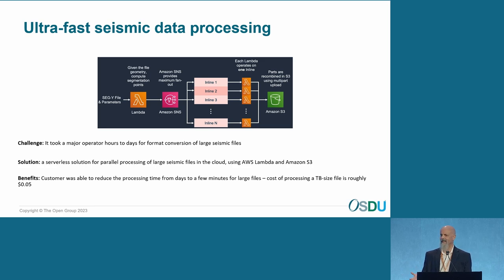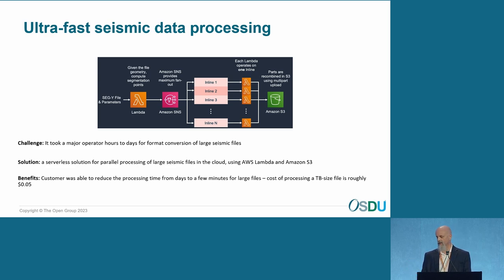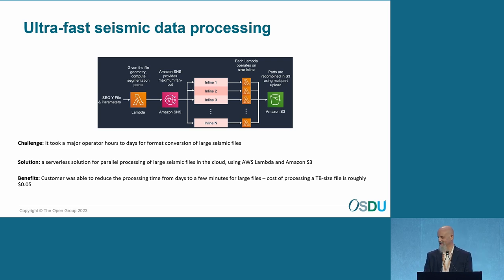One use case I want to highlight is ultra-fast seismic data processing. Using AWS Lambda, we were able to parallelize conversion of large seismic files — something that previously took hours — for a very low cost. We're talking about five cents to process a terabyte-sized file, in a fraction of the time, using parallelization and serverless. That's a solution we're really proud of.